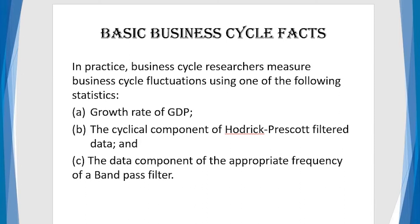business cycle researchers measure business cycle fluctuation using one of the following statistics: A, the growth rate of GDP; B, the cyclical component of the Hodrick-Prescott filter data; and C, the data component of the appropriate frequency of a band pass filter. I will show you later that the one that we privilege that we use very often is the Hodrick-Prescott filter.